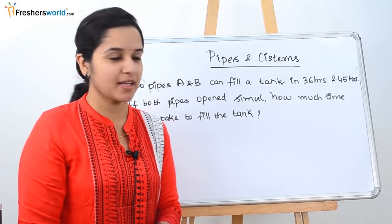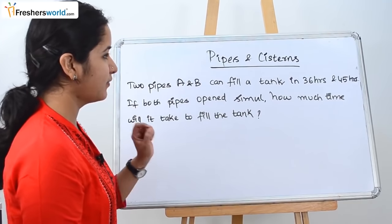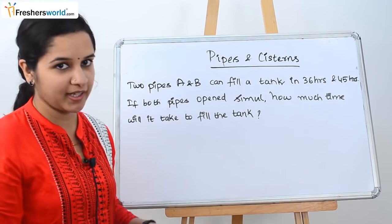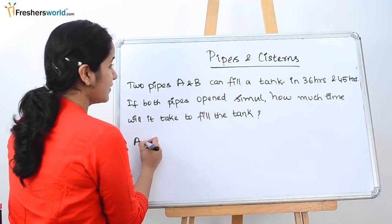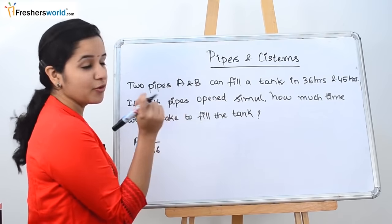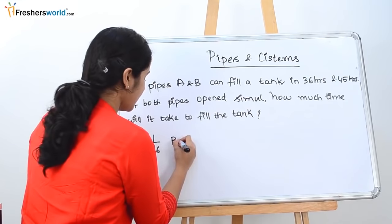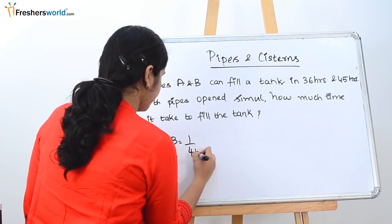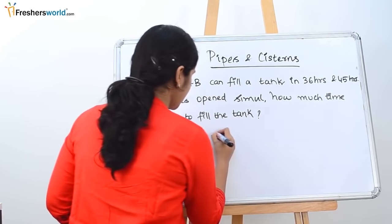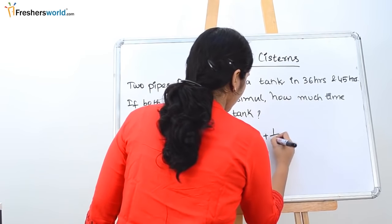Let's solve a couple of sums to understand this concept better. The first problem: two pipes A and B can fill a tank in 36 hours and 45 hours respectively. If both pipes are opened simultaneously, how much time will it take to fill the tank? Pipe A fills in 36 hours, so we represent it as 1/36. Similarly, B takes 1/45. Together it is 1/36 plus 1/45.